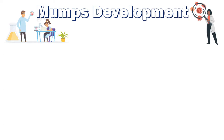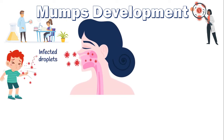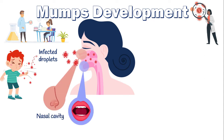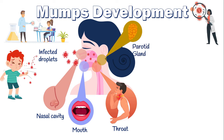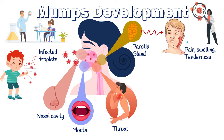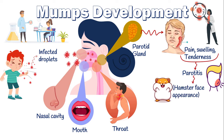Many aspects of the development of mumps are not well understood, and further in-depth clinical studies are needed. Experimental studies show that following exposure to infected droplets, the viral particles infect epithelial cells in the upper respiratory tract such as the nasal cavity, mouth, and throat. Afterward, the virus spreads to the parotid glands, causing pain, tenderness, and swelling in one or both parotid salivary glands. This condition is called parotitis, which gives a person with mumps a distinctive hamster face appearance.